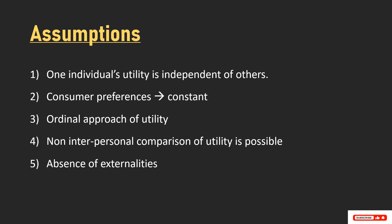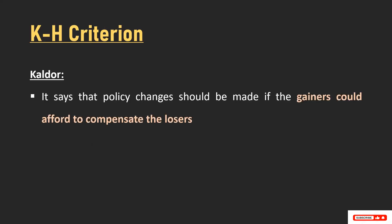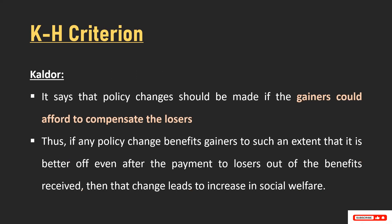The fifth assumption is that there is no externality — meaning no spillover benefits or spillover costs in the production or consumption of goods and services. So under these assumptions, we can examine the Kaldor-Hicks criterion. Let's understand the Kaldor criterion first. The Kaldor criterion says that policy changes should be made if the gainers could afford to compensate the losers. Thus, if any policy change benefits gainers to such an extent that they are better off even after paying the losers out of the benefits received, then that change leads to an increase in social welfare. In short, gainers are able to compensate the losers and still be better off.